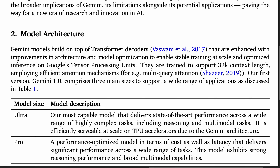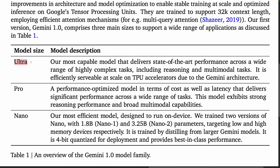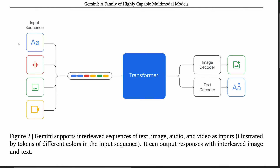Let's jump to model architecture. Gemini builds on transformer decoders and is trained to support a 32k context length. The Ultra model is the most capable and is apparently efficiently servable at scale on TPU accelerators — it would be interesting to know what this means in terms of cost. The Pro model is optimized for cost as well as latency. The Nano model is designed to run on-device and has two versions: Nano 1 with 1.8 billion parameters for low memory devices, and Nano 2 with 3.25 billion parameters targeting high memory devices. These are trained by distilling from larger Gemini models and are 4-bit quantized for deployment. The Gemini architecture allows input sequences of text, audio, images, and videos, and produces responses of text interleaved with images.